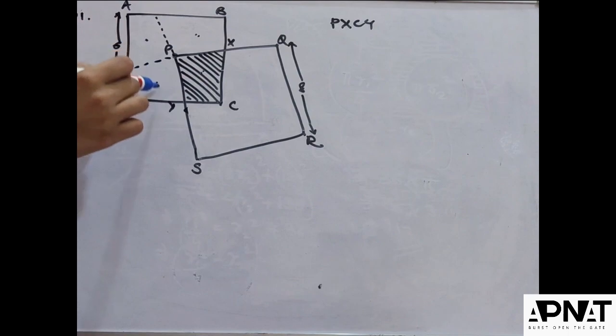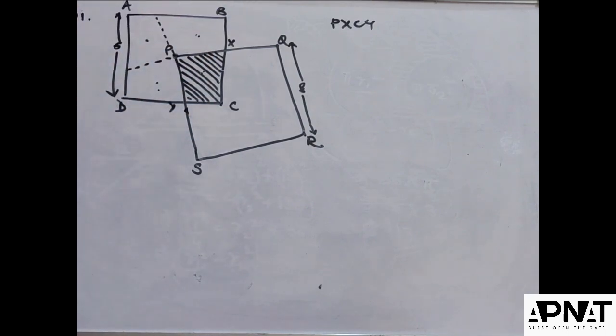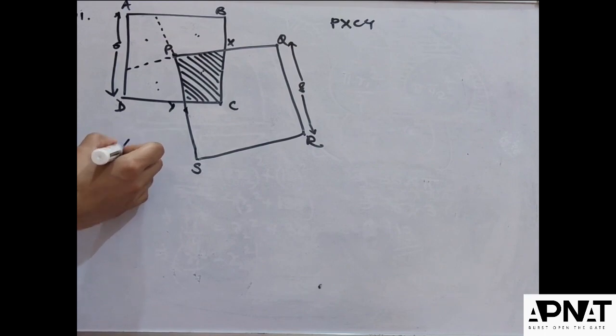And that means we can see this plus this plus this creates the whole square, right? So we can simply write four times the area of the shaded region...